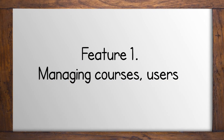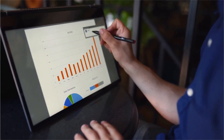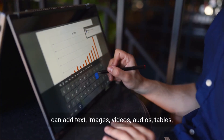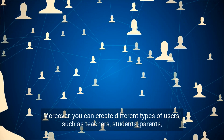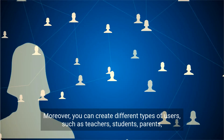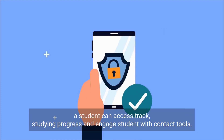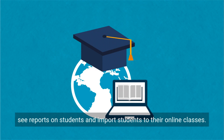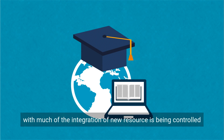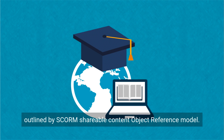Feature 1: Managing Courses and Users. The LMS may be used to create professional structured course content. The teacher can add text, images, videos, audios, tables, links, interactive tests, slideshows, etc. You can create different types of users, such as teachers, students, parents, visitors, and editors. It helps control which content a student can access, track studying progress, and engage students with contact tools. Teachers can manage courses and modules, enroll students, or set up self-enrollment, see reports on students, and import students to their online classes — with integration of new resources controlled by technical guidelines outlined by SCORM, the Shareable Content Object Reference Model.